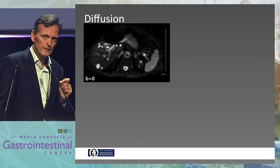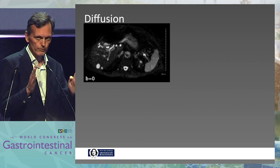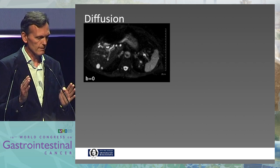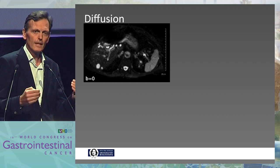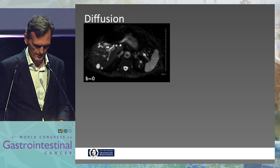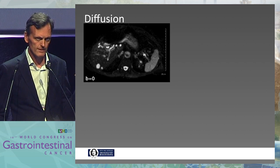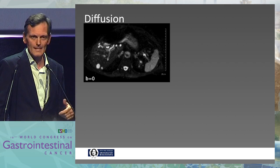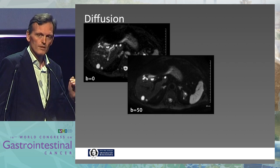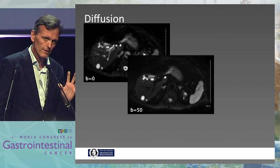There are those strange B values that may have come across. They identify a technical, physical move to eliminate rapid proton movements. What you do when you increase the B value is you decrease the signal of rapidly flowing protons. If you look at the vessels with a low B value of zero, you will see vessels as well as movement in some lesions in the liver. With a higher B value, the rapid movement of protons in the vessels disappears, but we still see the rather rapid movement elsewhere.